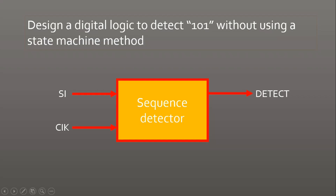A little more elaboration: you have to design this black box — the sequence detector — which has two inputs: clock and SI. SI is a one-bit serial input. Detect is the output flag which will go high whenever the required sequence is detected at its input. You can pause the video here and try to think of the answer.